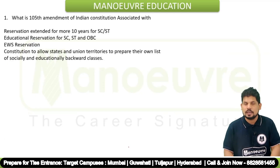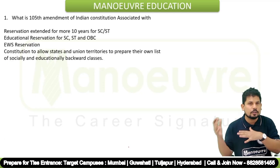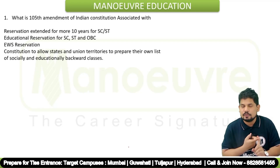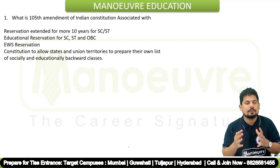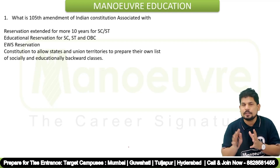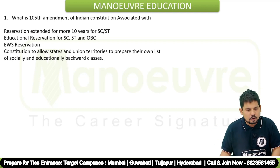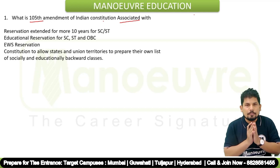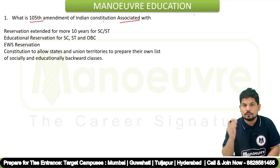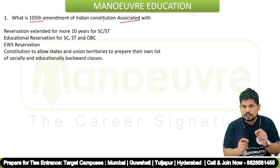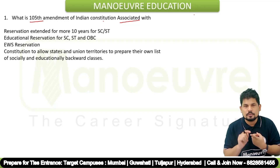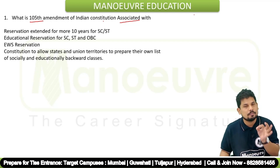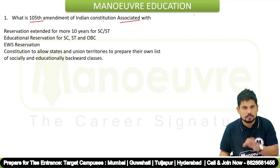Now, coming to the important current affairs. Here are the most highly expected questions in MCQ format. The first question is: what is the 105th Amendment of the Indian Constitution associated with? This is very important because amendment-type questions are highly likely to come from the General Awareness section, and this is part of recent current affairs.